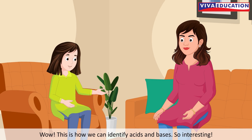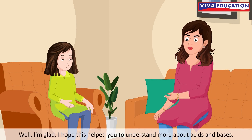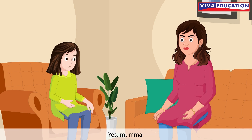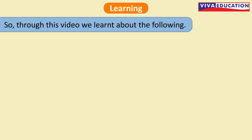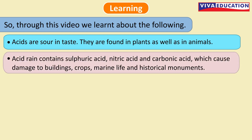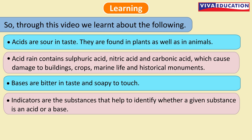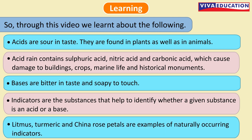This is how we can identify acids and bases — so interesting! I hope this helped you understand more about acids and bases. Through this video, we learnt the following: Acids are sour in taste and are found in plants as well as in animals. Acid rain contains sulfuric acid, nitric acid and carbonic acid, which cause damage to buildings, crops, marine life and historical monuments. Bases are bitter in taste and soapy to touch. Indicators are substances that help identify whether a given substance is an acid or a base. Litmus, turmeric and china rose petals are examples of naturally occurring indicators.